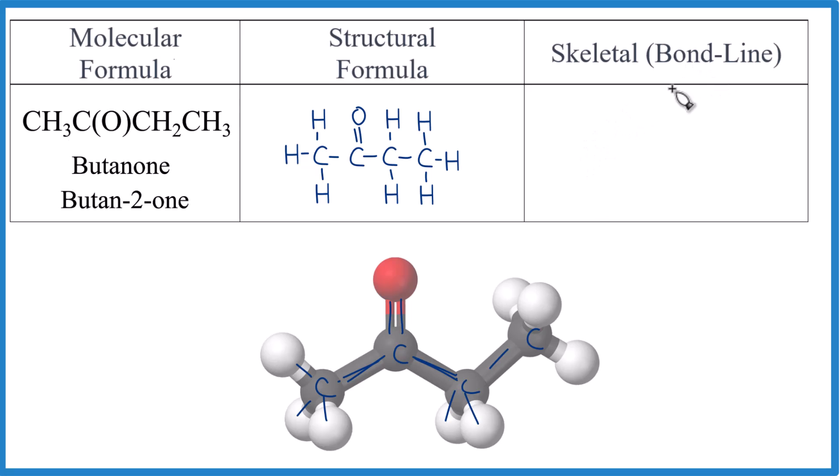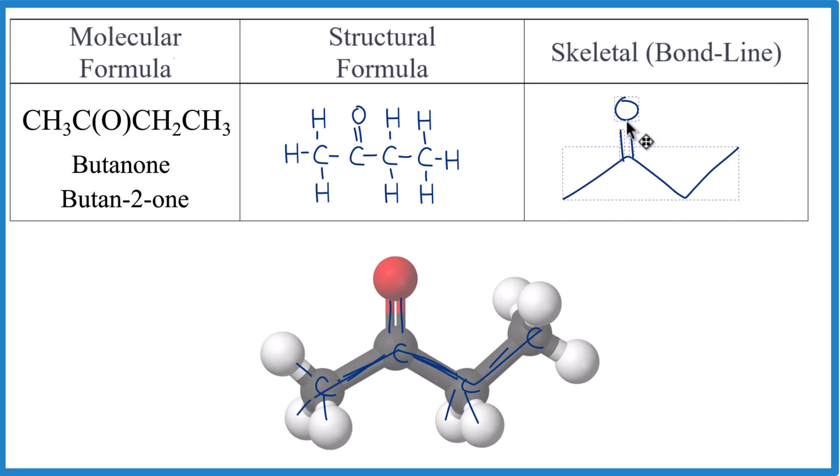For the skeletal formula, we're going to go one, two, three, four carbons. One, two, three, four carbons. Carbons are right here. We've used all four and on the second carbon, double bond. So that's our skeletal formula or our bond line formula for butanone.